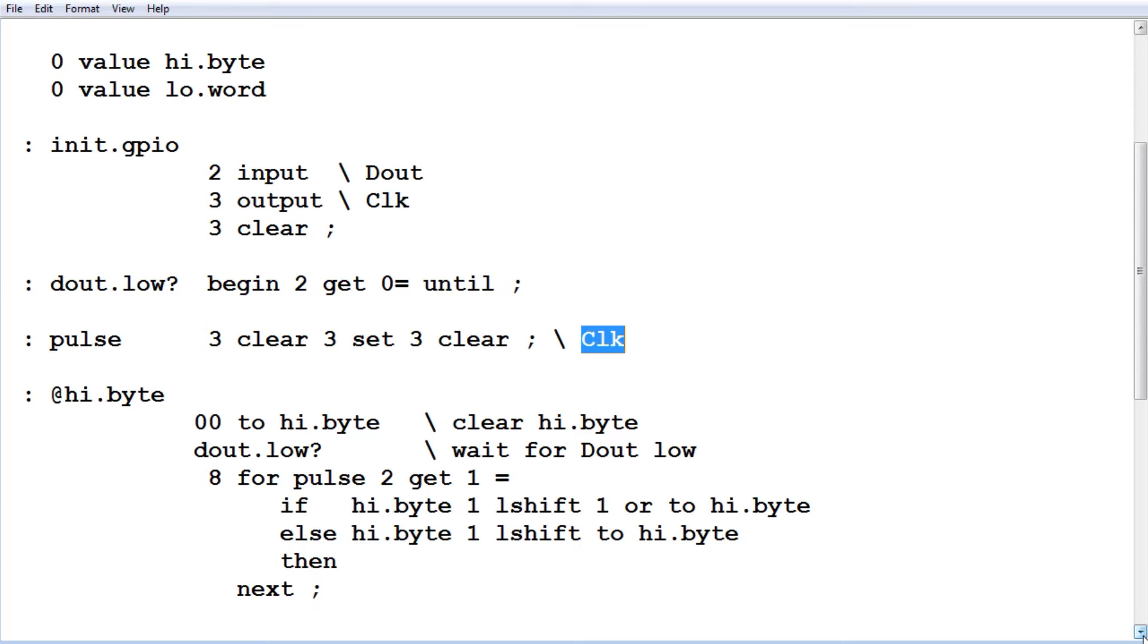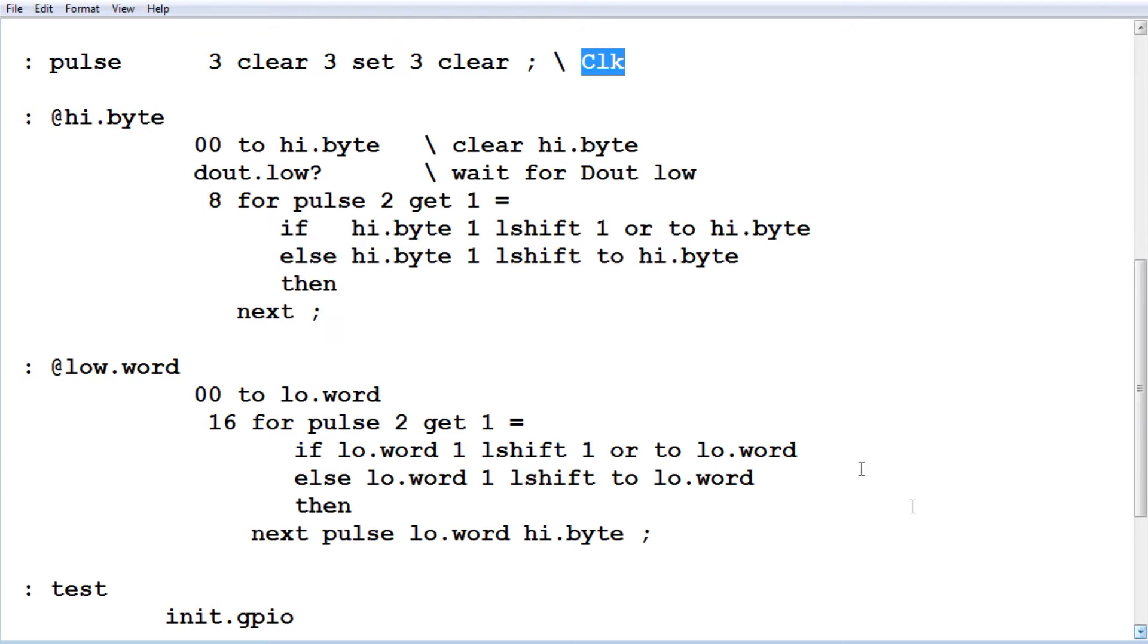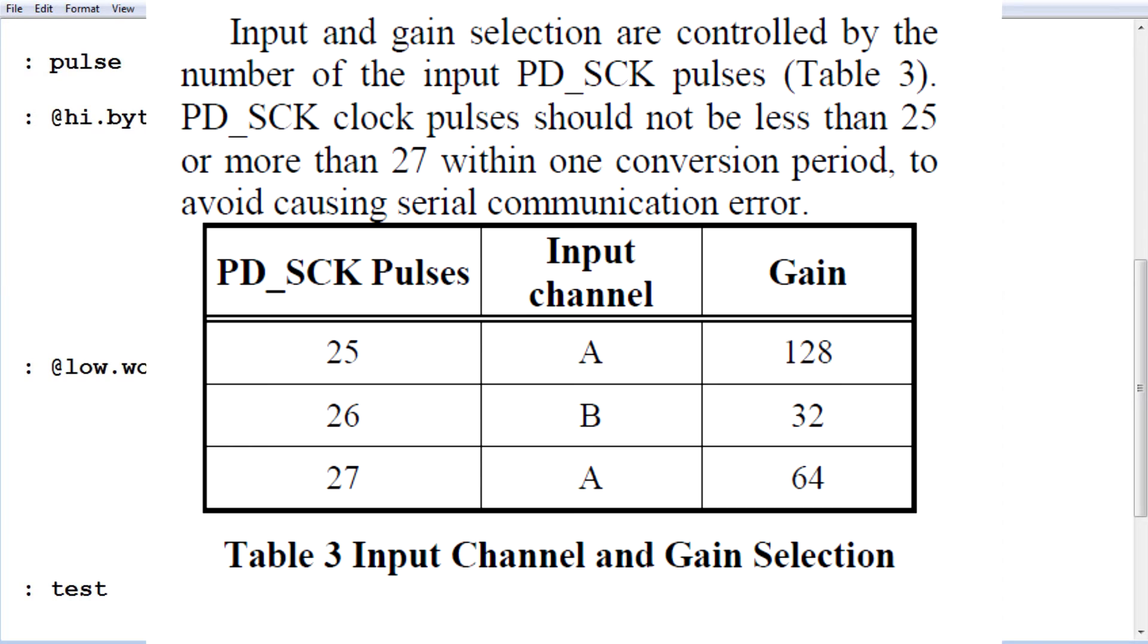Then we have two words called read high byte and read low word. Now read high byte will send eight clock pulses to the ADC and we'll get eight bits back from the ADC. Read low word will send 16 clock pulses into the ADC and we'll get 16 ADC bits back. Together there'll be 24 bits, that'll be our 24-bit word. Then we give it one more pulse and that will configure the gain of the amplifier to 128.